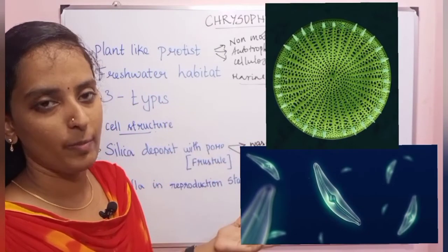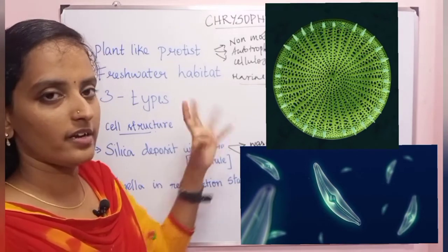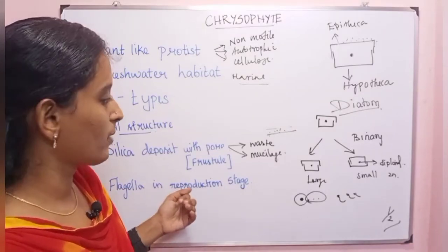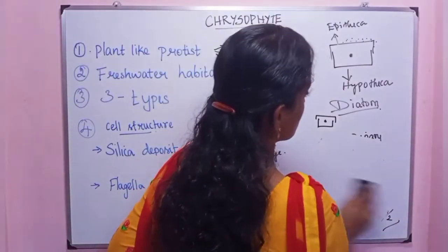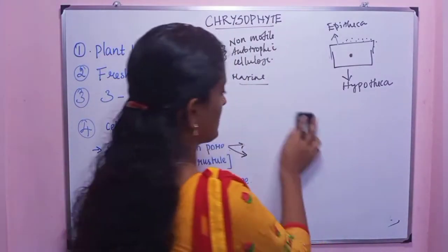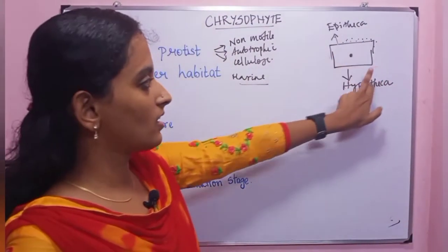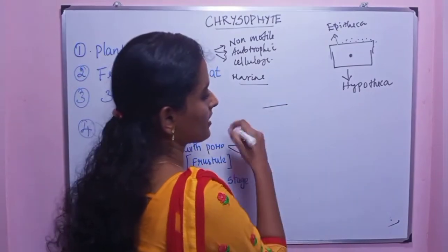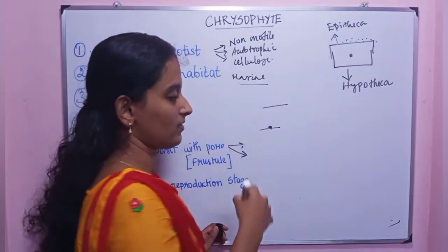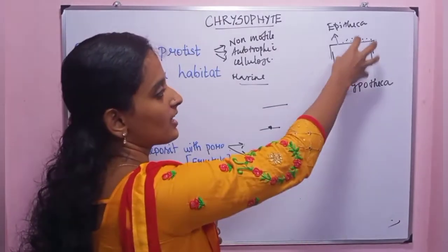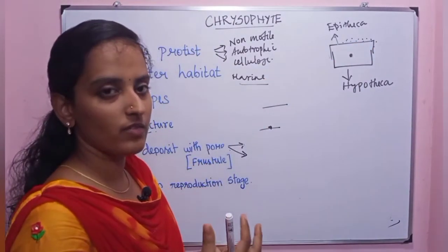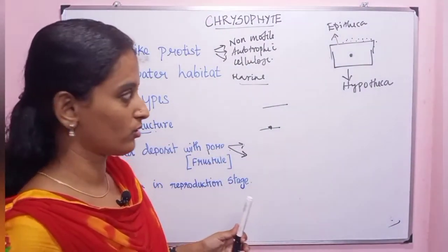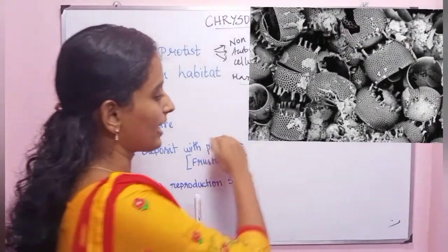Diatoms are of two shapes: centric (round) and pennate. Diatoms have a silica shell. When diatoms die, they sink to the bottom of the water, the silica layer is not degraded, and it forms a layer called diatomaceous earth.